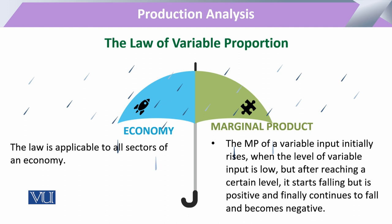So when initially we add to the variable input, it will give rise to total production. When we add more, a good amount of that input, the production will increase but not at that higher rate as before. And if we add even more input, a very large chunk of that input, our production can decline further. So it is possible that the proportion of variable input increases but production declines.